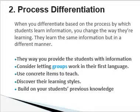Now let's look at process differentiation. When you differentiate based on the process by which students learn information, you change the way they are learning — process is all about how students learn. They learn the same information but in a different manner. Give students information in manageable chunks rather than all at once. For lower achievers, give one section of a reading passage at a time; for higher achievers, give more material where they write a summary, while lower achievers fill in gaps or brainstorm vocabulary.